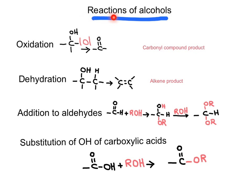This is a discussion of the family of alcohol reactions. The first reaction is the oxidation of a carbon-oxygen single bond to form a carbon-oxygen double bond — that is, a carbonyl compound product. The second reaction is the dehydration, which means the removal of an OH hydroxyl group from the alcohol and a hydrogen from the neighboring carbon.